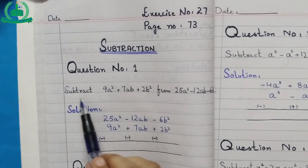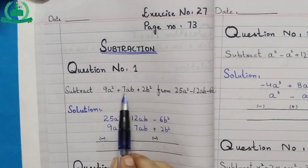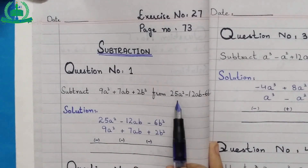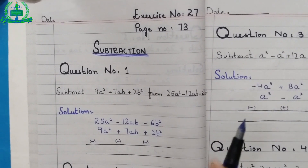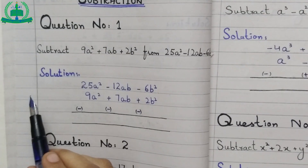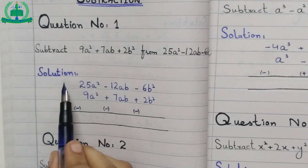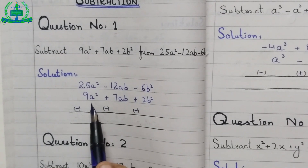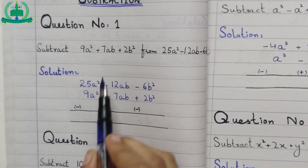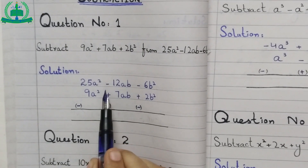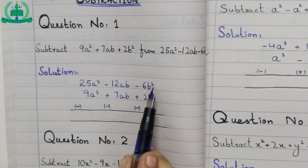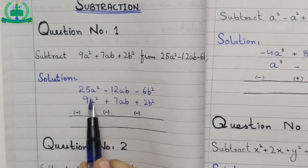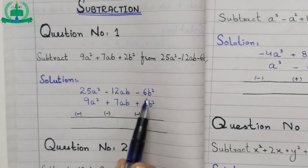Question number 1: subtract 9a square plus 7ab plus 2b square from 25a square minus 12ab minus 6b square. In subtraction, we write the second term first. So the second term here is 25a square minus 12ab minus 6b square, and we will write it first. Give the heading of solution. First, arrange the variables and powers: largest power is a square, then ab, then b square. So we write 25a square minus 12ab minus 6b square.